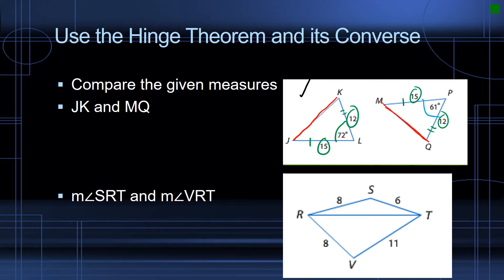In other words, angle L is greater than angle P. Now let's go back to what we're asked to compare: JK and MQ. In both cases, JK is opposite angle L and MQ is opposite angle P. We can see here that angle L is greater, and so therefore, JK is going to be greater than MQ based upon the Hinge Theorem.